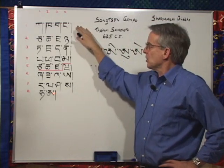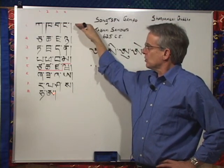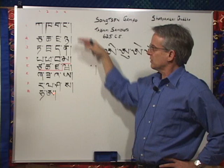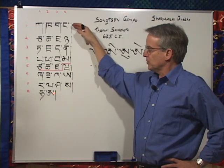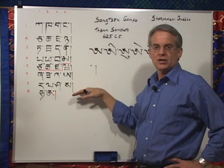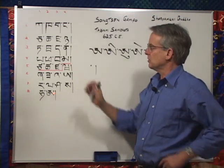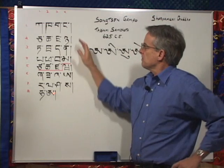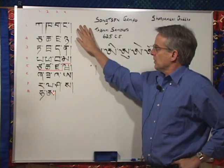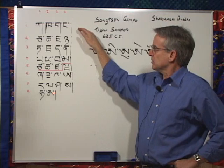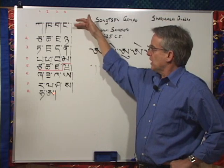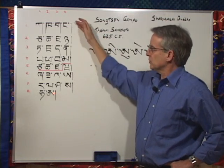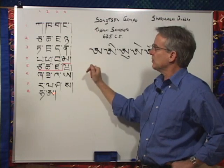The Tibetan alphabet is always taught in a manner like this, with the 30 consonants laid out in 8 rows and 4 columns. The reason for this is that Tibetan, similar to Sanskrit, has groups of sounds that are quite similar, that share characteristics in common.